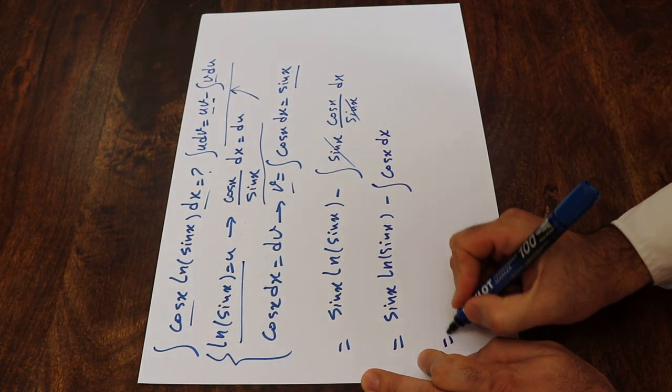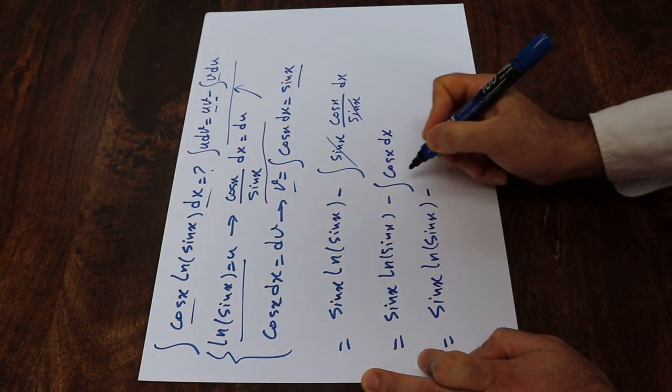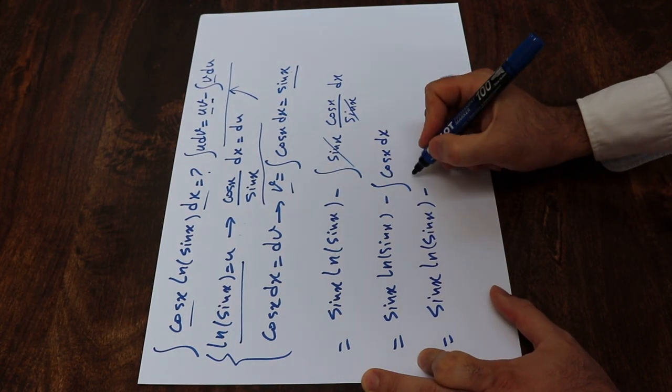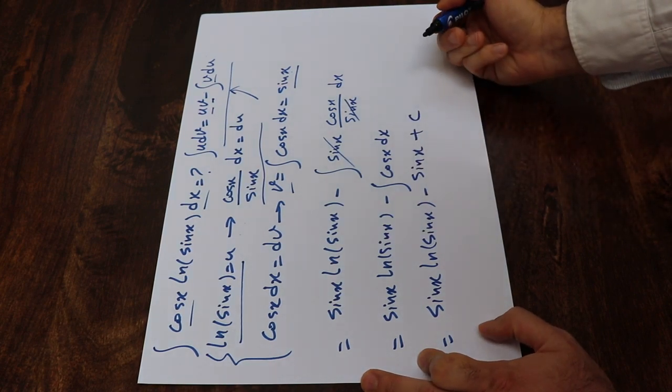And therefore, this will be equal to sine x ln sine x minus, and we know the integral of cosine x is equal to sine x plus c. That's the constant of integration.